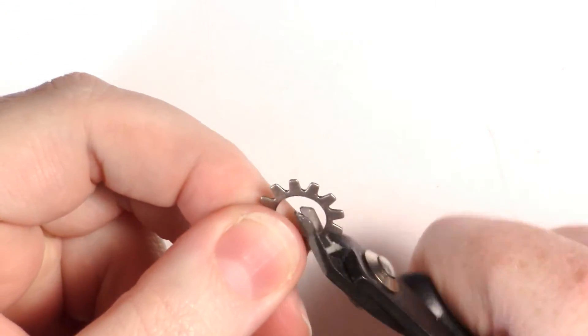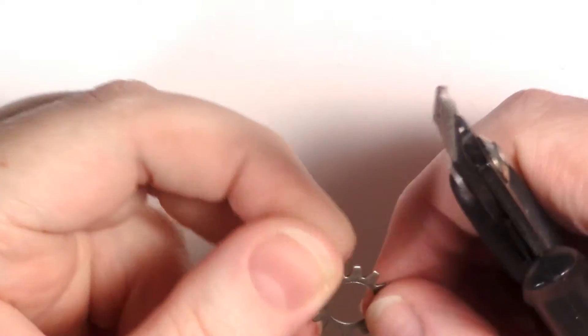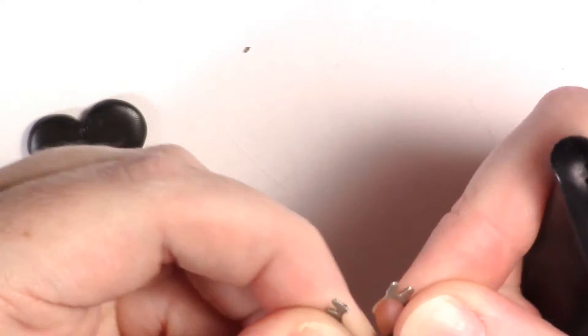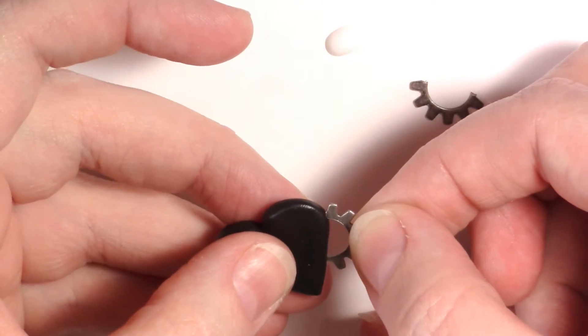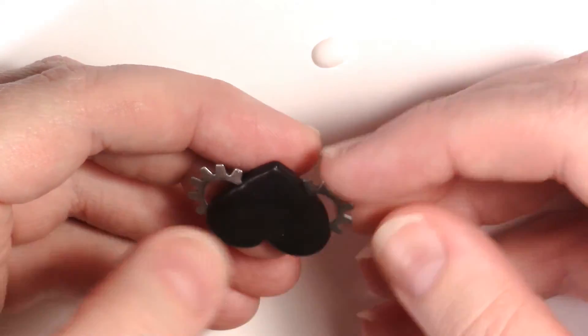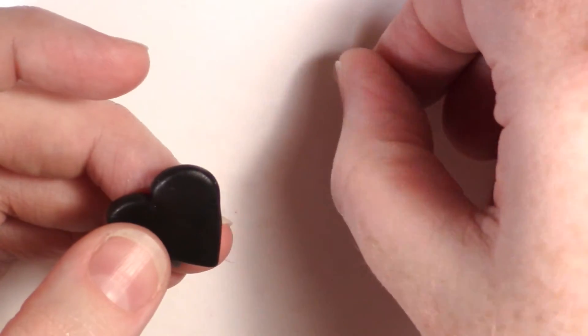Now, take your cutters and cut your gear in half. Line up one piece on each side of the heart. Push the gear into the heart to make some grooves. Then pull the gear back out and dip the ends into liquid clay and push it back into place.